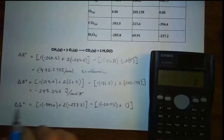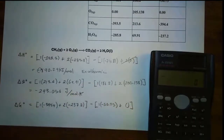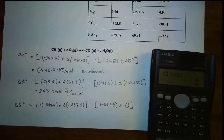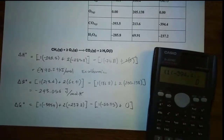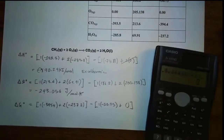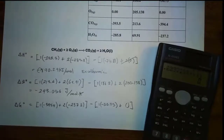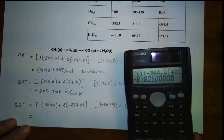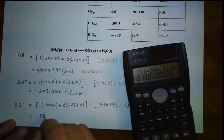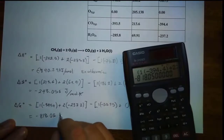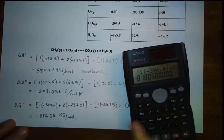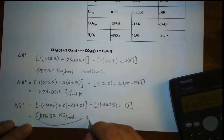Now let's plug everything into the calculator. Remember that bracket represents parenthesis. So: parenthesis, 1 times negative 394, plus 2 times parenthesis, negative 237.2, parenthesis, parenthesis, minus parenthesis, 1 times negative 50.75, parenthesis, parenthesis. The unit is kilojoule over mole, and the negative tells you this reaction is spontaneous.